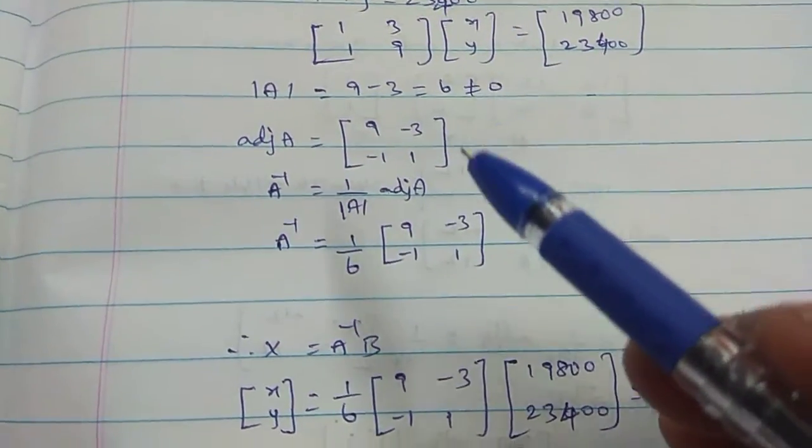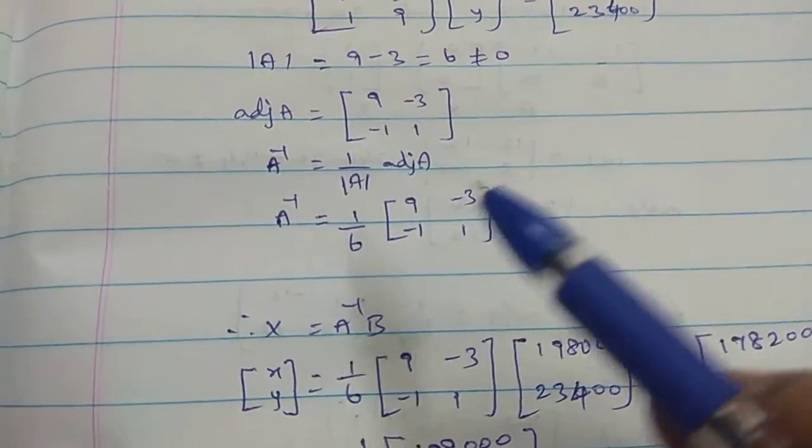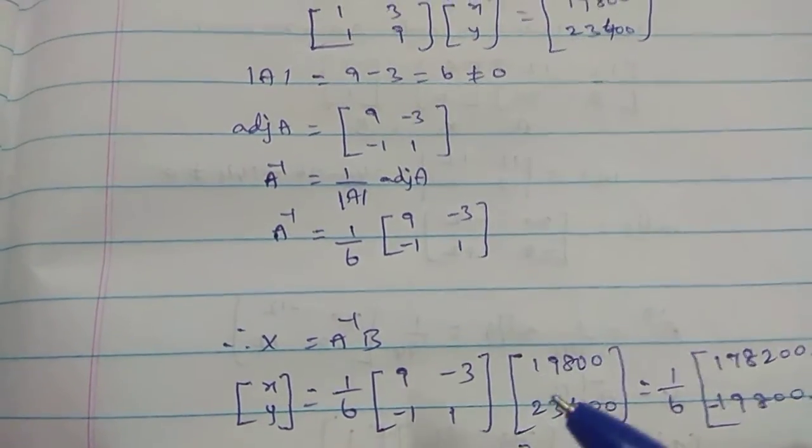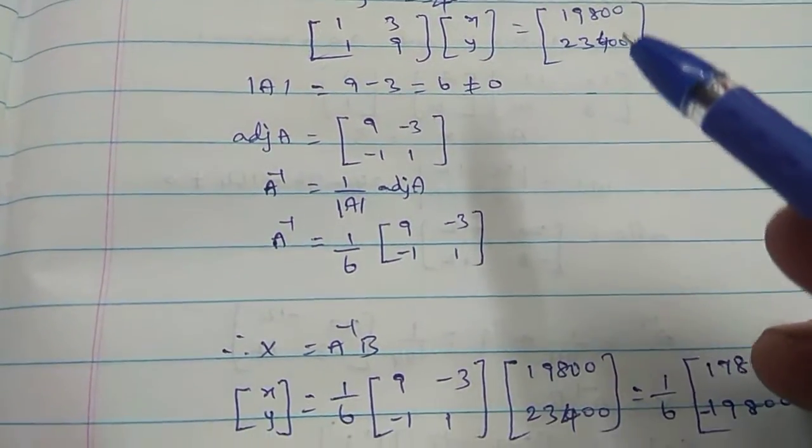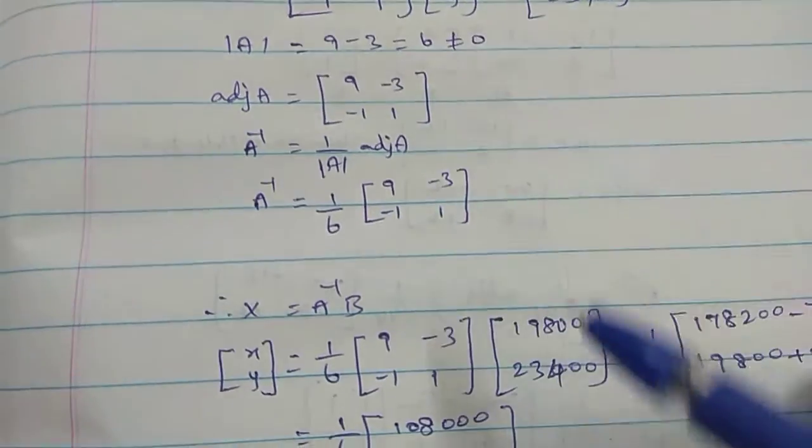Therefore X equal to A inverse into b. Capital X equal to small x, y equals 1 by 6 into 9 minus 3 minus 1 1 into constant 19,800 and 23,400.